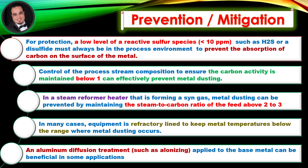Control of the process stream composition to ensure the carbon activity is maintained below one can effectively prevent metal dusting. In a steam reformer heater that is forming a syngas, metal dusting can be prevented by maintaining the steam to carbon ratio of the feed above 2 to 3.